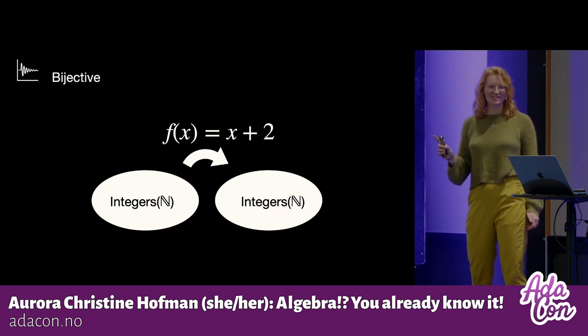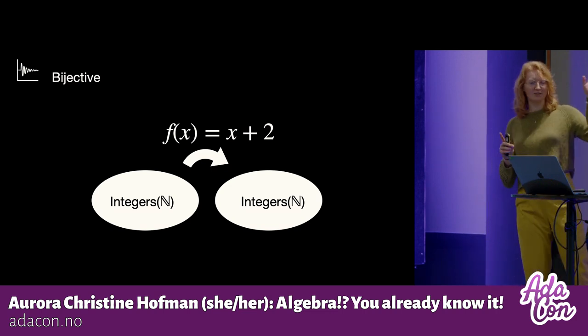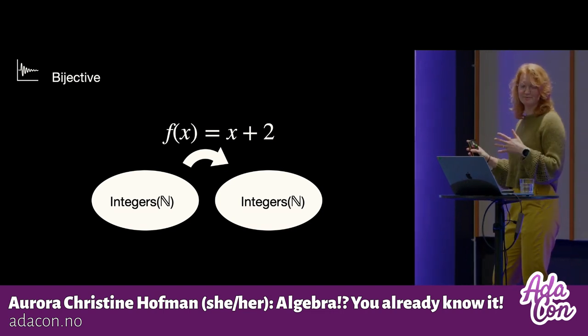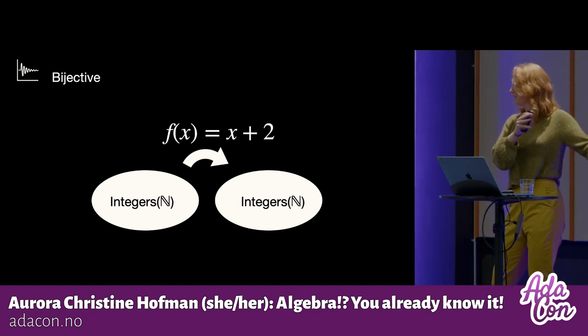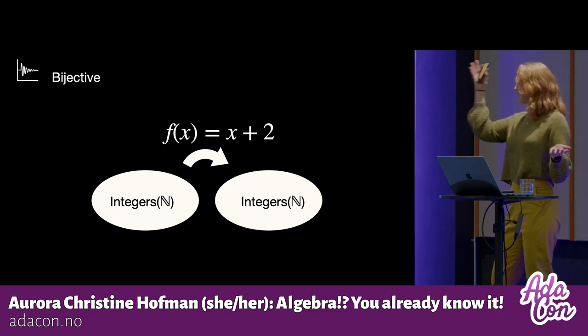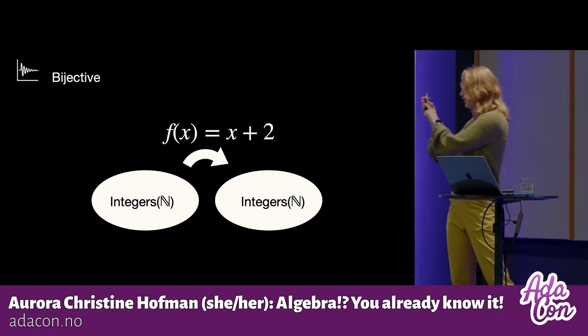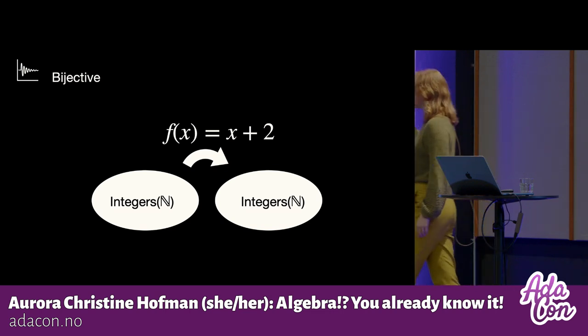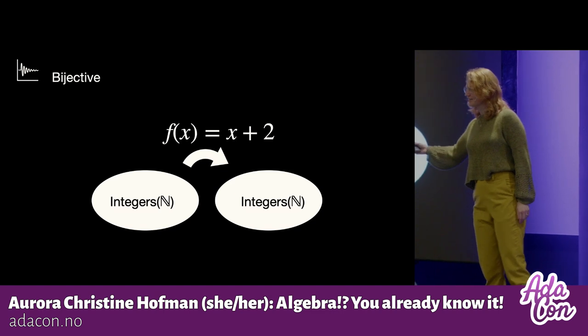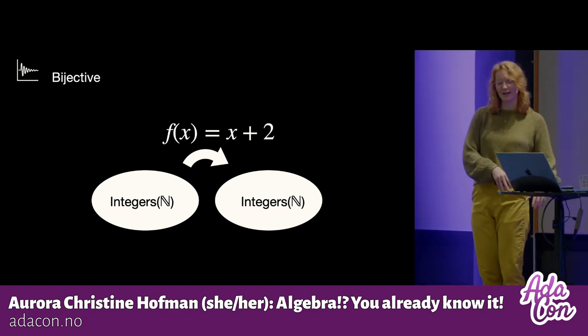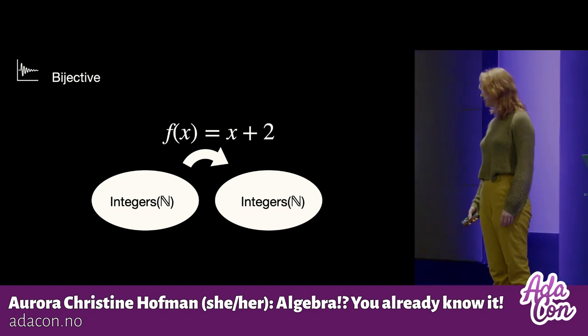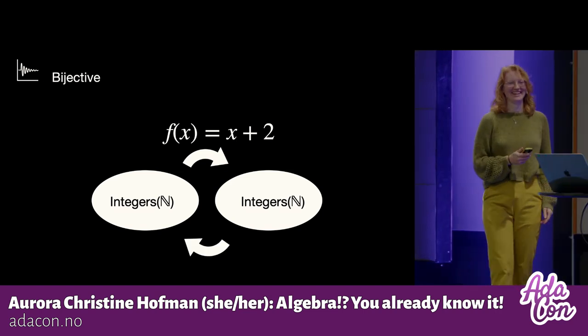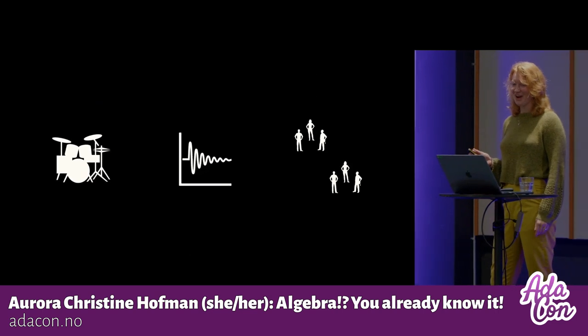So another example, we go from the integer space to the integer space with the function x plus two. Now I can start anywhere. I can, for example, start with three, I can add two, end up in five, and I know that I can subtract two and get back. But I can also start in my codomain with five, and I can subtract two, end up with three, and I can add two again and end up in the same space. So this is really cool.